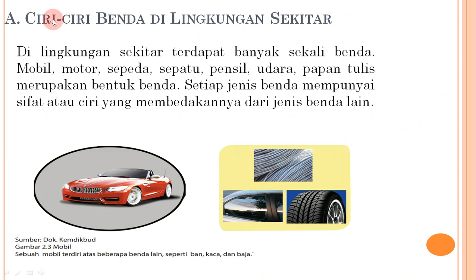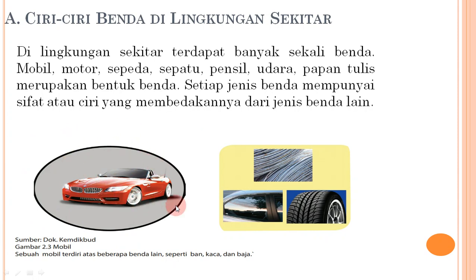Selanjutnya kita lihat ciri-ciri benda di lingkungan sekitar. Di lingkungan sekitar terdapat banyak sekali benda: ada mobil, motor, sepeda, sepatu, pensil, udara, papan tulis. Setiap jenis benda mempunyai sifat atau ciri yang membedakannya dari jenis benda lain. Contohnya mobil tersusun dari beberapa benda lain seperti karet, kaca, dan logam. Satu benda bisa tersusun dari benda-benda yang lain, dan sifat-sifat benda sangat banyak: ada yang cair, gas, padat, lentur, keras, dan sebagainya.